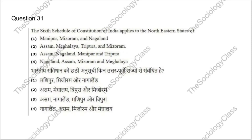Question 31: The Sixth Schedule of the Constitution of India applies to which northeastern states? Options include various combinations of Manipur, Mizoram, Nagaland, Assam, Meghalaya, and Tripura. The correct answer is B — Assam, Meghalaya, Tripura, and Mizoram. All important schedules of the Constitution must be studied for the exam.